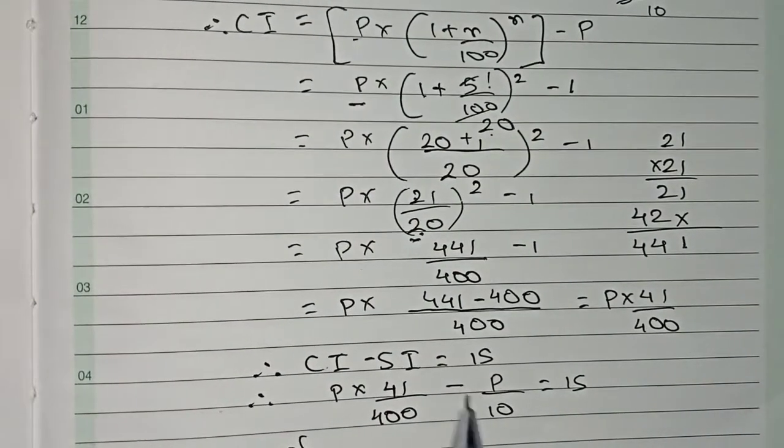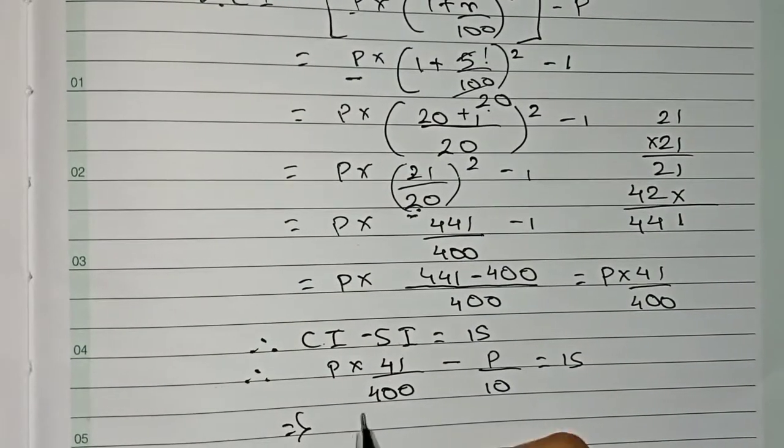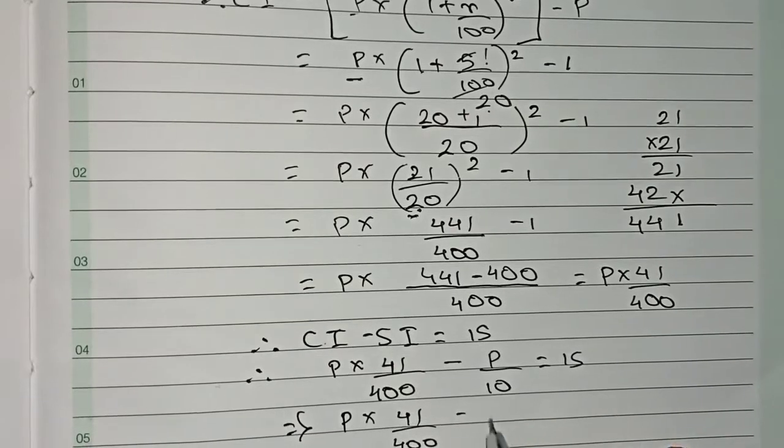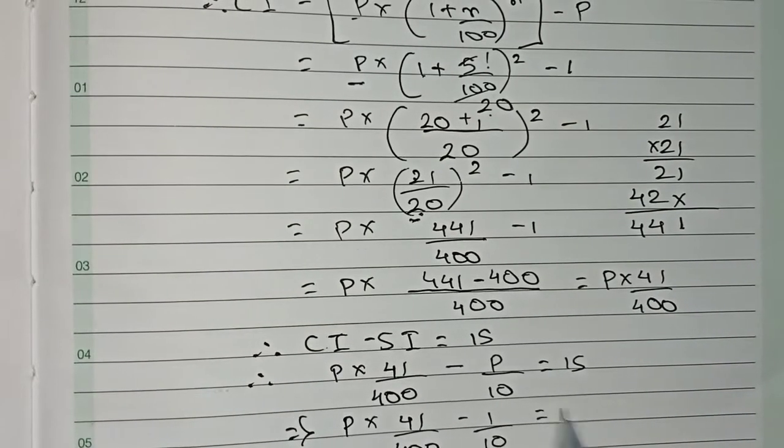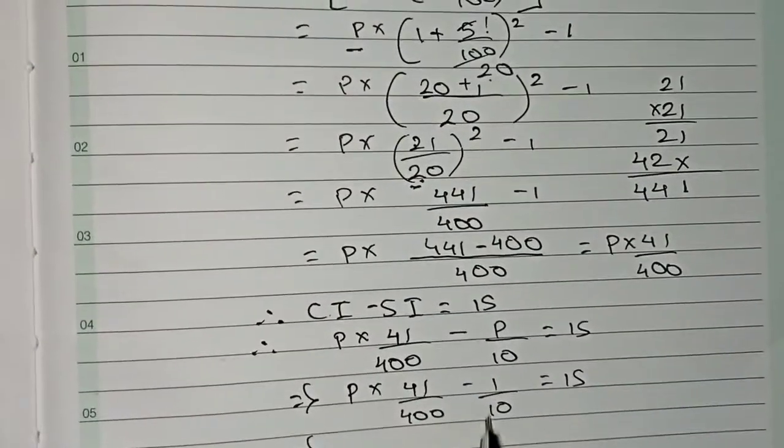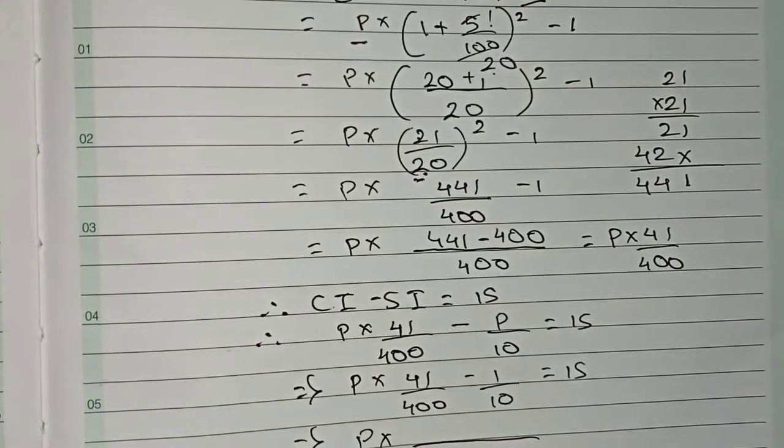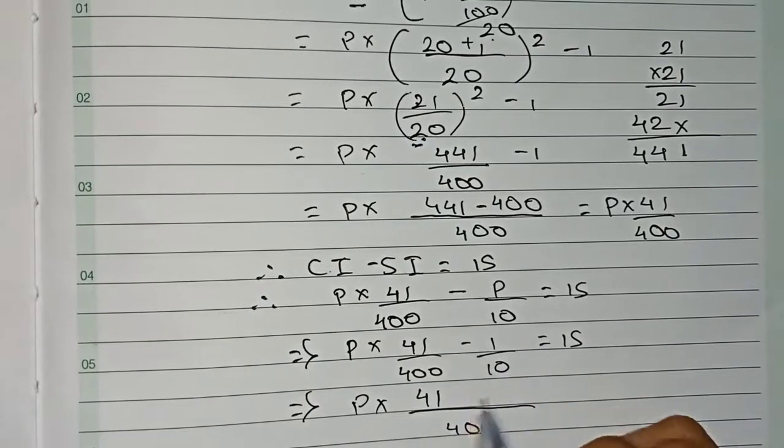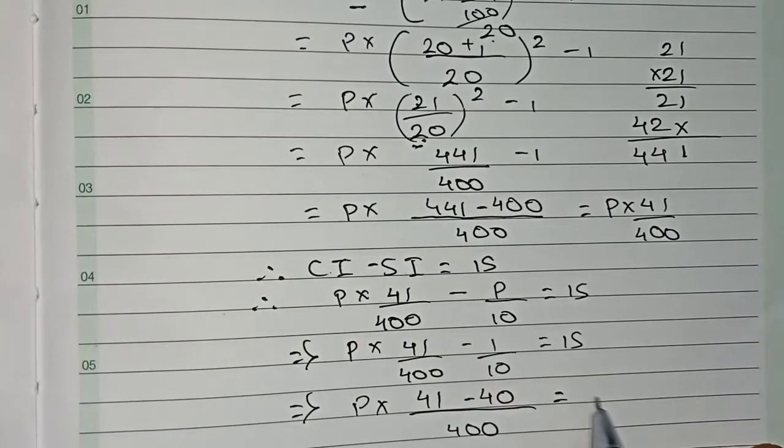Now here we take P as common, so this will become minus 1. P × (41/400 - 1/10) = 15. Now take 400 as the common denominator: 41 minus 40 equals 1. So P × 1/400 = 15.